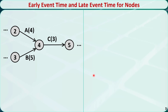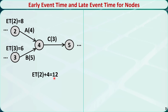Let's check some examples. This is a part of a project network with activities A, B, and C. Their durations are 4 days, 5 days, and 3 days respectively. Activities A and B are predecessors of activity C. Suppose we know the early event times for nodes 2 and 3 are 8 and 6 respectively. Let's find the early event time for nodes 4 and 5. The earliest time node 2 can happen is at time 8, and the duration of activity A is 4, so the earliest time node 4 can happen via A is 8 plus 4, equal to 12. The earliest time node 3 can happen is at time 6, and the duration of activity B is 5, so the earliest time node 4 can happen via B is 6 plus 5, equal to 11.